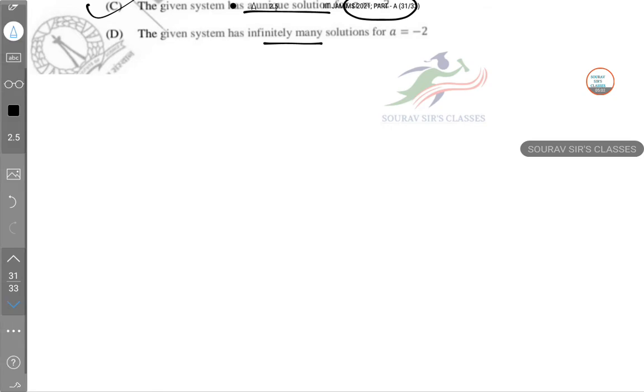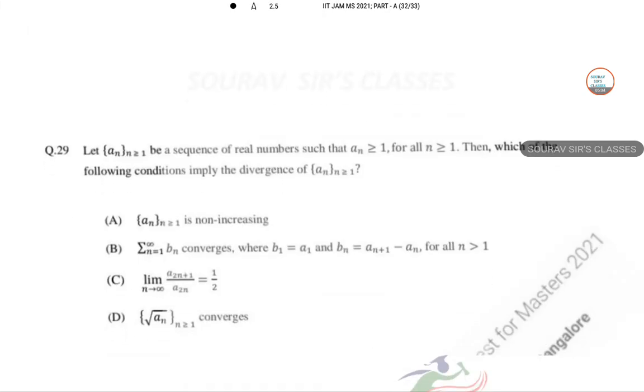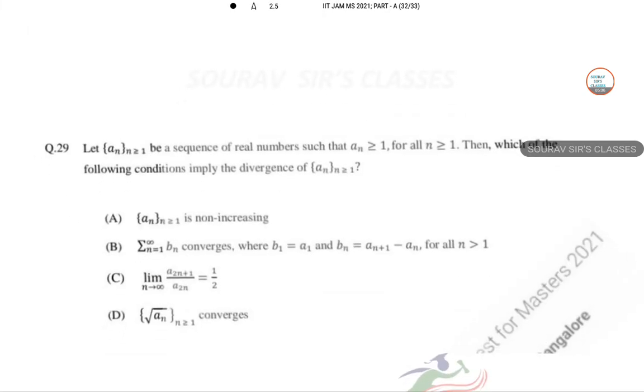Next one, 29: Let a_n be a sequence of real numbers such that a_n greater than or equal to 1 for all n greater than or equal to 1. Then which of the following conditions imply the divergence?